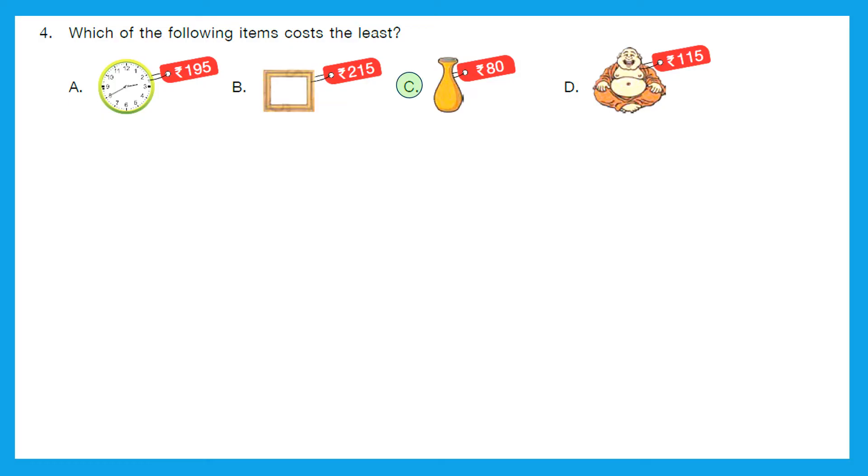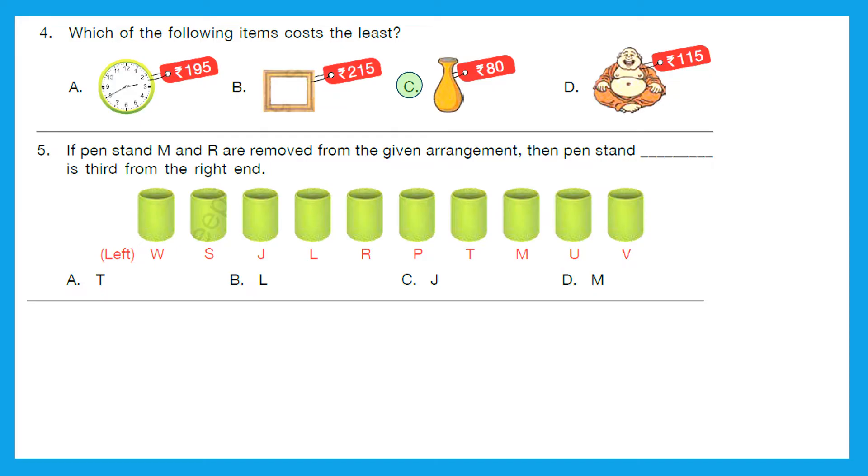Question 5: If pen stands M and R are removed from the given arrangement, then pen stand dash is third from the right end. Let's remove M and R first. I removed it, and then let's find out which one is the right end. Left hand is already given, so the opposite end is right end. Now from there which one is the third one? First pen stand, second pen stand is U, and the third pen stand is T. So our answer is option A, T.